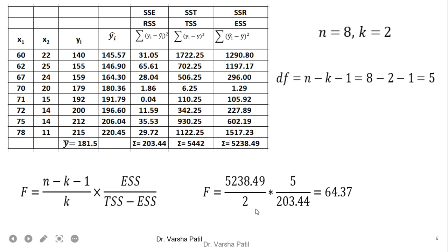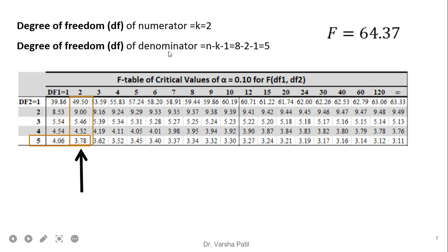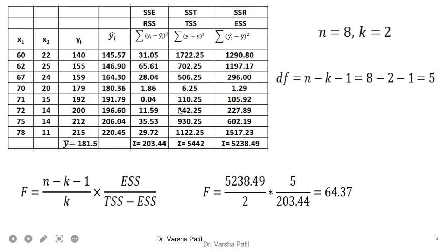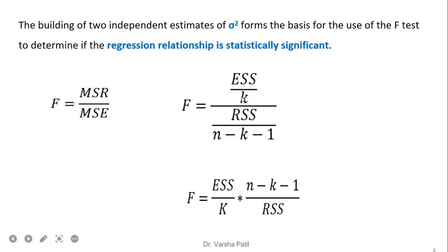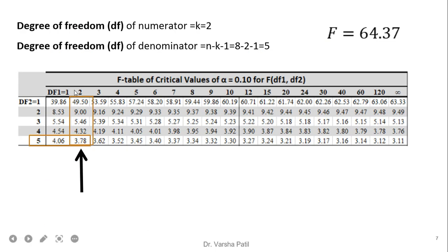The calculated F-test value is 64.37. To check the F-table, we need the degrees of freedom for numerator and denominator. The numerator degree of freedom is k and the denominator is n minus k minus 1. With k equal to 2 and n equal to 8, the denominator degree of freedom is 5. From the F-table at the intersection of 2 and 5, we get 3.78.